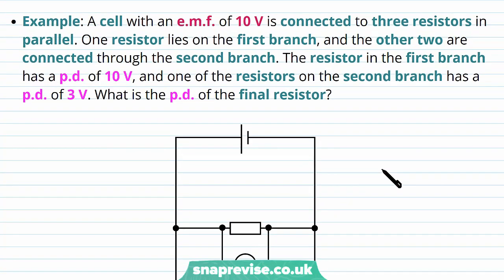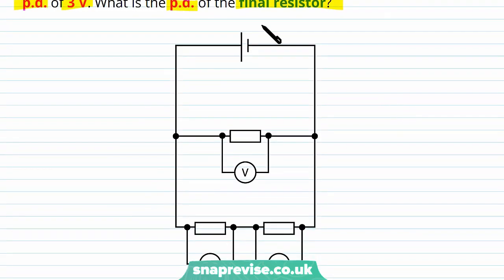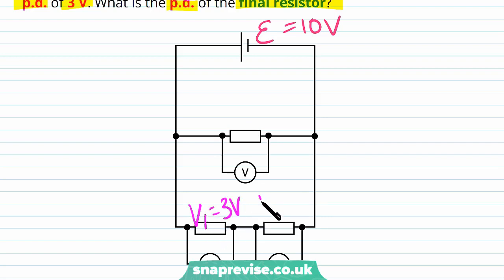Example: a cell with an EMF of 10 volts is connected to three resistors in parallel. One resistor lies on the first branch and the other two are on the second branch. The resistor in the first branch has a potential difference of 10 volts. One of the resistors on the second branch has a potential difference of 3 volts — we'll call this V1 equals 3 volts. We want to find the potential difference of the other resistor in that branch, V2. The resistor in the first branch is V3 equals 10 volts.